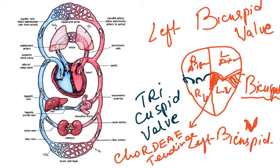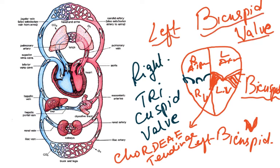So: right side has the tricuspid valve, left side has the bicuspid valve. This is just a brief overview of the terminology we will be using — bicuspid valve and tricuspid valve, left side bicuspid, right side tricuspid.